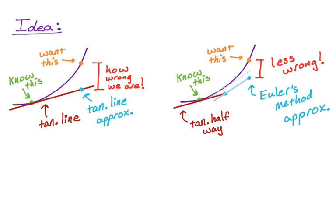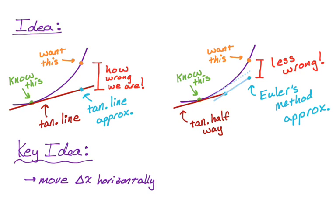So the key ideas here on this slide are that we move delta x horizontally to get from the point we know to the point we want to know. And then we move delta x times the slope vertically to get from the y value we currently know to the next y value. So that's going to be our delta y. So let me draw another picture for that.